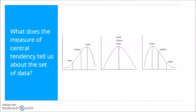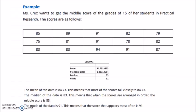What does the measure of central tendency tell us about this set of data? Example, Ms. Cruz wants to get the middle score of the grades of 15 of her students in practical research. The scores are as follows. And using the data analysis, this is the result. So we have here the mean, the median, and the mode.